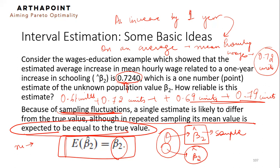However, individually, they may, their expected value, their average value would be 0.72. But individually, they will fluctuate from 0.72.